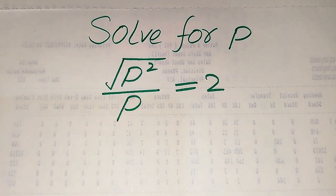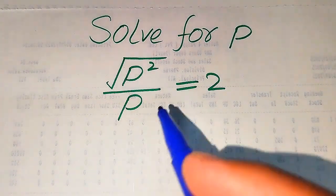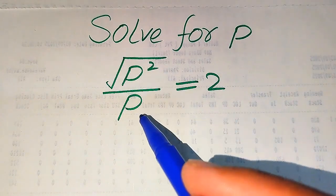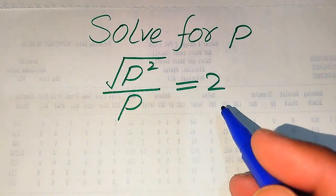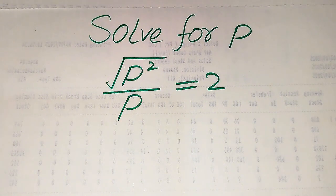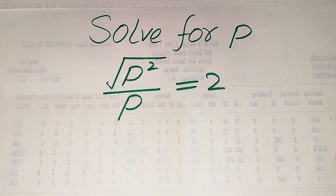Hello everyone. How to solve this problem for the values of p: square root of p squared divided by p equals 2. We solve this problem for the values of p. First, we find all the roots of this equation, and at last we will verify which of the roots are solutions and which are extraneous roots.